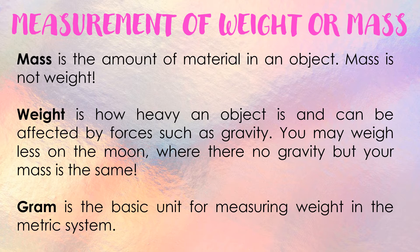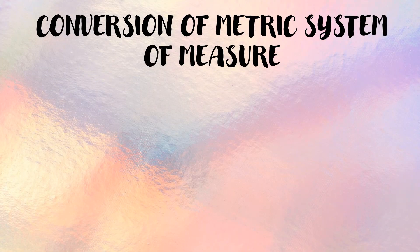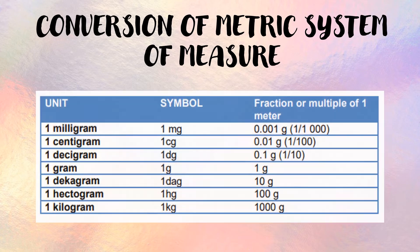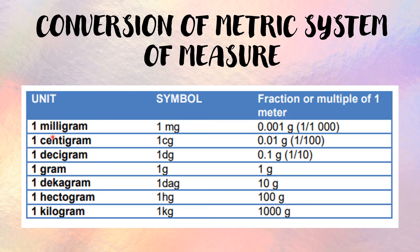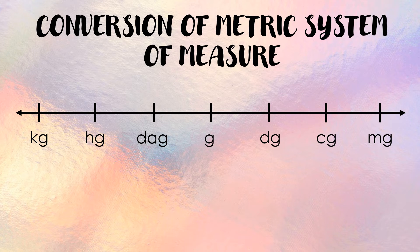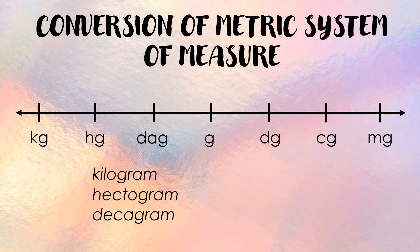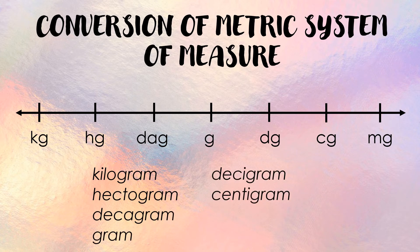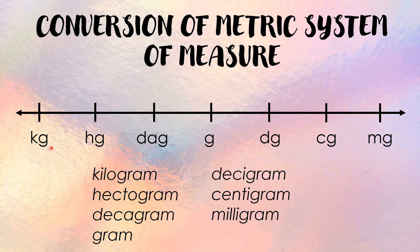Gram is the basic unit of measuring weight in the metric system. Let us now proceed to the conversion of the metric system of measure. The lightest unit is represented by milligram and the heaviest by kilogram. The metric system for mass uses: kilogram (kg), hectogram (hg), decagram, gram, decigram, centigram, and milligram — just like length uses km/m and volume uses kl/L, but here we replace the base unit with 'g' for grams.